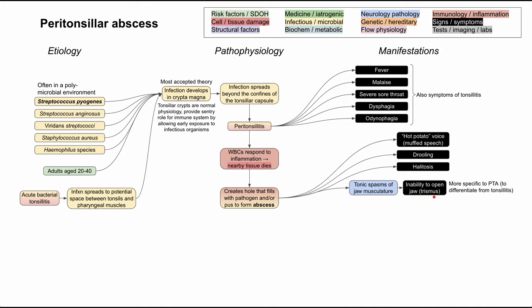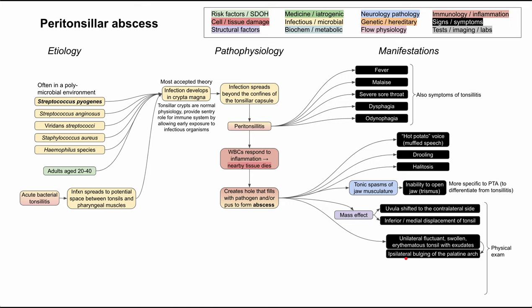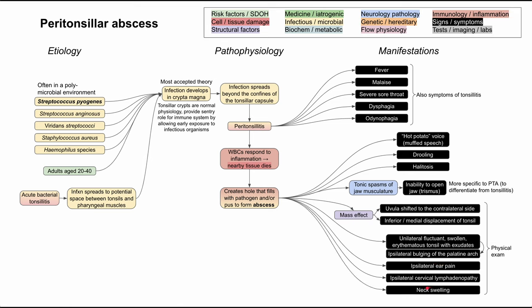So hot potato voice, drooling, halitosis, and trismus should make you think peritonsillar abscess. On physical exam, because the abscess takes up space, the patient might have deviation of the uvula to the contralateral side — the uvula is the little dangly thing in the back of the throat, and it will be pointed away from the peritonsillar abscess due to mass effect. They'll also have inferior and medial displacement of the tonsil if the abscess is quite large. You might see a unilateral fluctuant, swollen, erythematous tonsil with exudates, causing bulging of the palatine arch on the same side. Additionally, they can have ipsilateral ear pain, ipsilateral cervical lymphadenopathy, and if the inflammation is really bad, visible neck swelling from the outside.